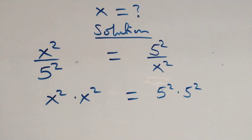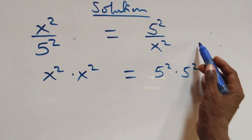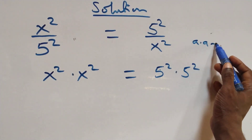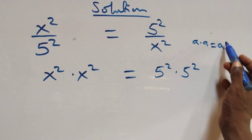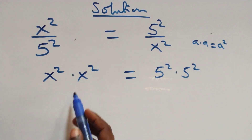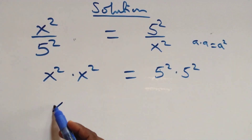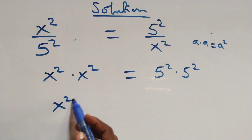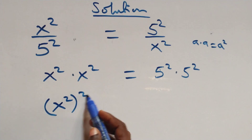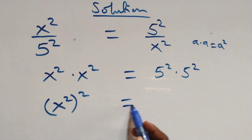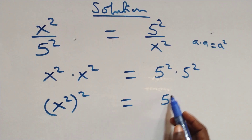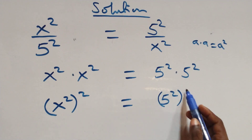The next step: when we cross multiply, we have x² times x², which gives us x⁴, and on the right side we have 5² times 5², which gives us 5⁴.